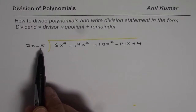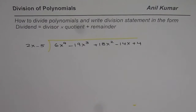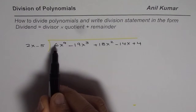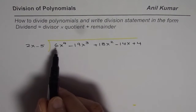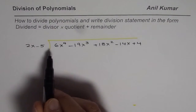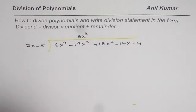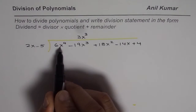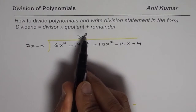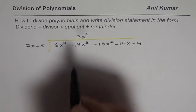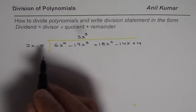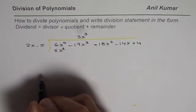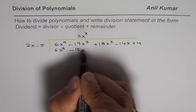We expect a remainder of degree one less than the divisor — that means a constant or zero. To take care of the first term 6x to the power of 4, we multiply 2x by 3x cubed to get 6x to the power of 4, so 3x cubed goes in the quotient. Since the divisor has two terms, we engage two terms from the dividend. Multiplying 3x cubed by 2x gives 6x to the power of 4, and 3x cubed times minus 5 gives minus 15x cubed.